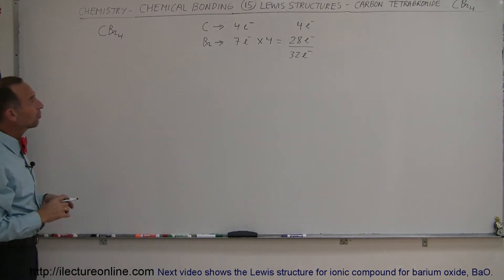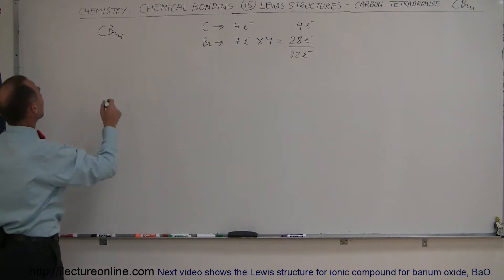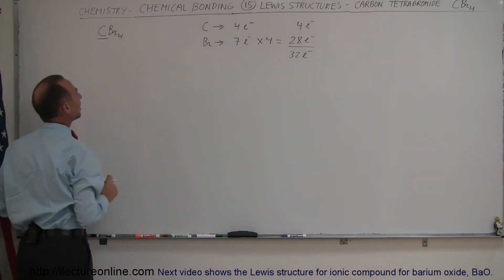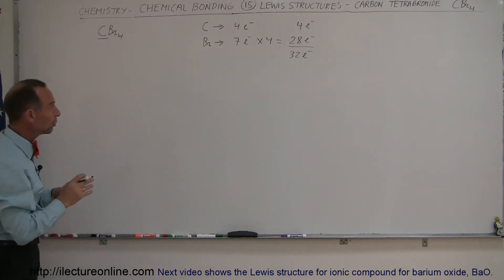Okay, next we're looking at the atom with the lowest electronegativity, which is carbon. Not by much, but it is. But also carbon has the fewest valence electrons, so we expect that to be the central structure.